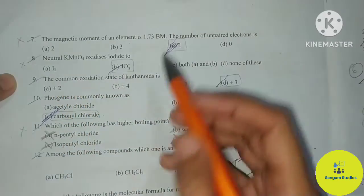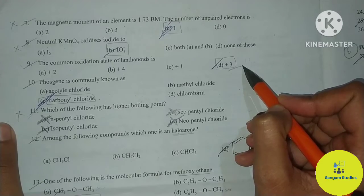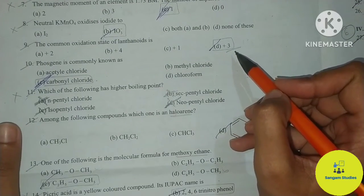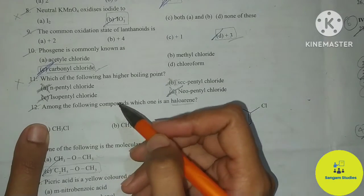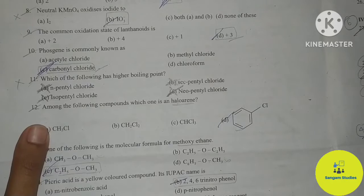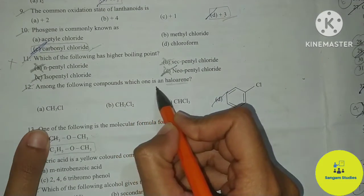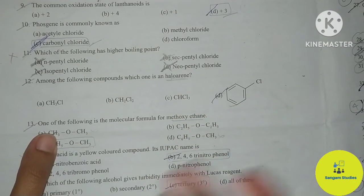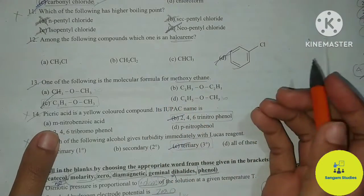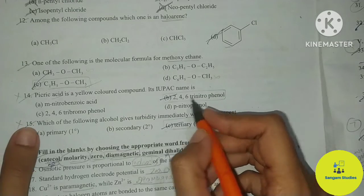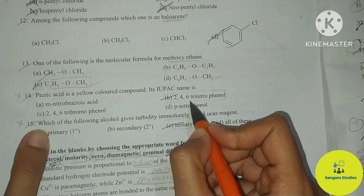Neutral KMnO₄ oxidizes iodide to IO₃⁻. The common oxidation state of lanthanides is +3 — of course, +3 is the answer. Carbonyl chloride — direct question. Which of the following has a higher boiling point? — direct question. Among the following compounds, which one is a haloarene? — easiest question; a haloarene has a benzene ring, so D is the right answer. Which one of the following is the molecular formula of methoxy ethane? — easiest answer: C₂H₅OCH₃. Picric acid is a yellow colored compound — its IUPAC name is 2,4,6-trinitrophenol.